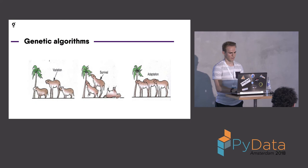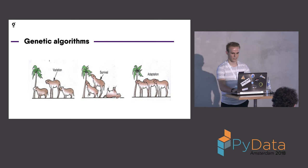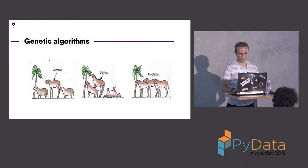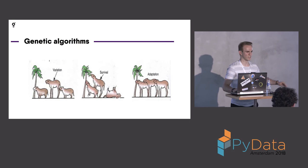A lot of these methods make use of genetic algorithms. A genetic algorithm is a machine learning algorithm based on evolution and natural selection. The animal in the middle can reach the leaves in the tree and the others can't, so the middle one will survive and eventually reproduce and the rest of the population will adapt to it.